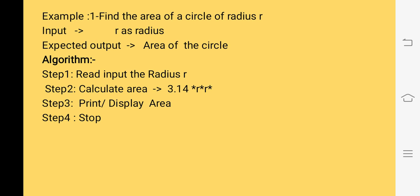Now we will write the Algorithm. First, we will start with reading the radius — Read r. Next step, we will calculate the area with the help of pi r squared. After calculating the area, we will print the area in the next step. And finally, we will use the stop keyword to indicate that we have completed the Algorithm.